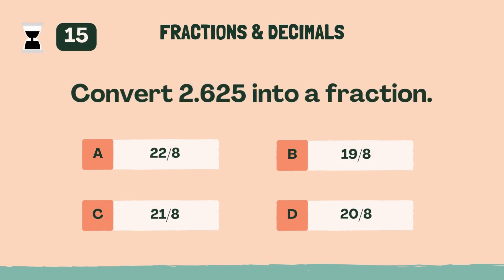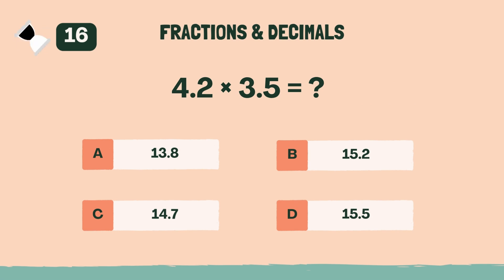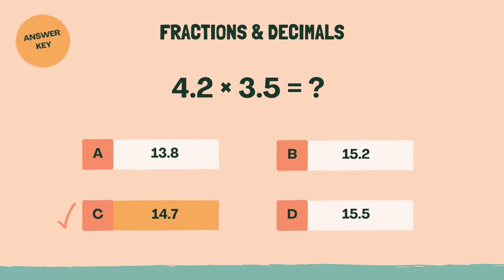Convert 2.625 into a fraction. The answer is C, 21 eighths. What is 4.2 times 3.5? The answer is C, 14.7.